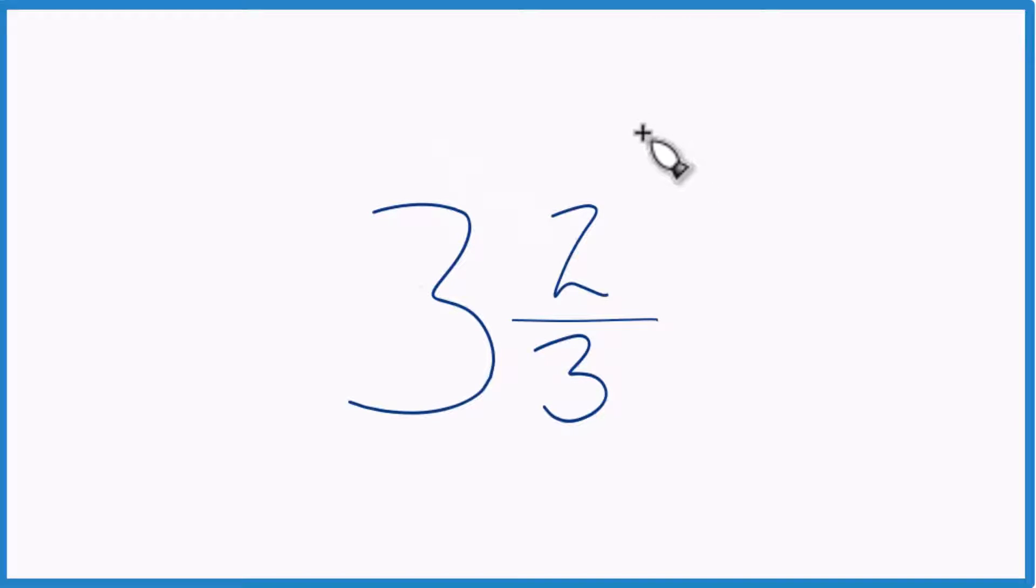So let's write the mixed number 3 and 2 thirds as an improper fraction. Here's how we do it.